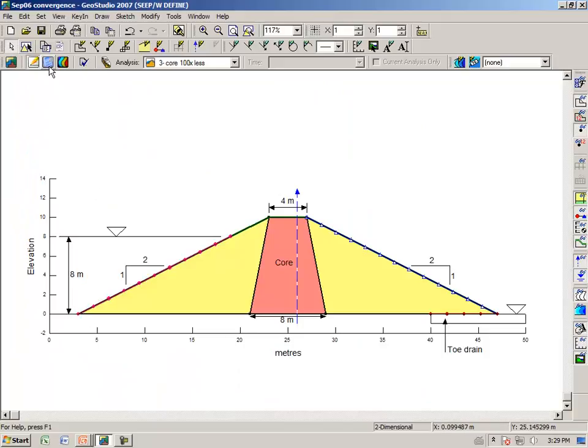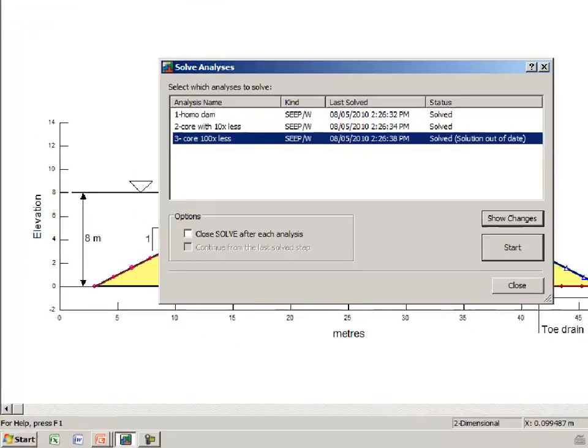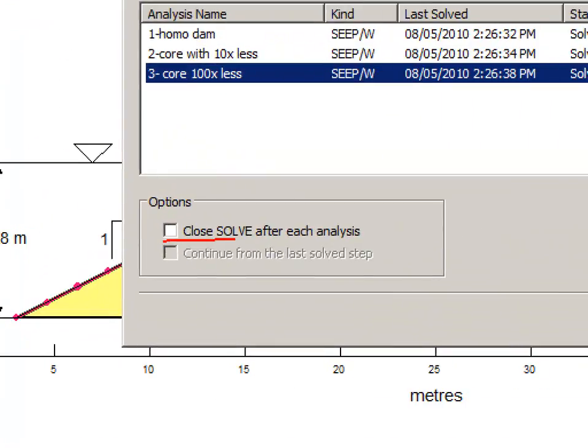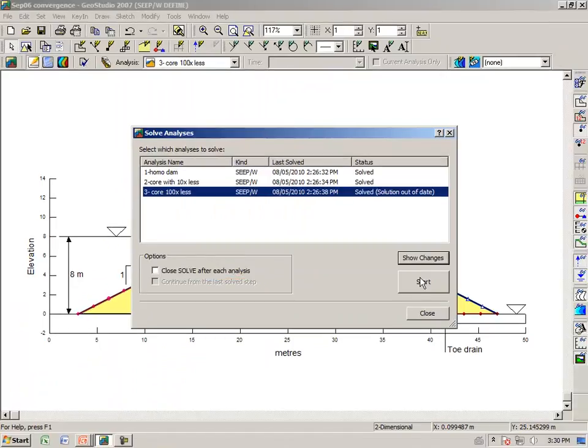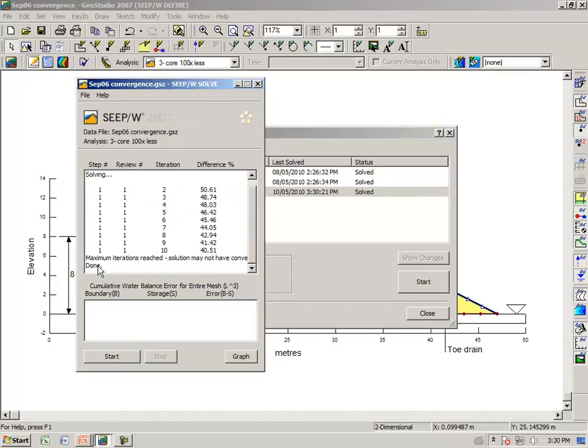Now let's go to the solve dialog box and make sure that this is unchecked so that the solve window stays open. We'll run analysis number three. And notice there's a message here that says maximum iterations reached, solution may not have converged. What I want to draw your attention to is this graph button.